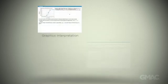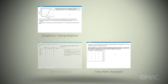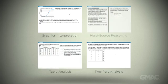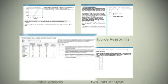There are four types of questions on the integrated reasoning section of the GMAT exam. Each question format is designed to measure how well you are able to analyze and interpret information from multiple sources.